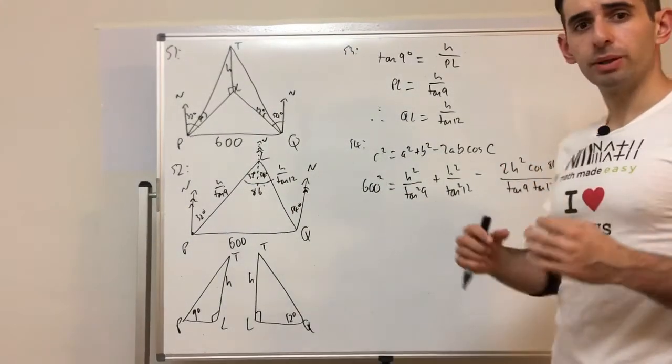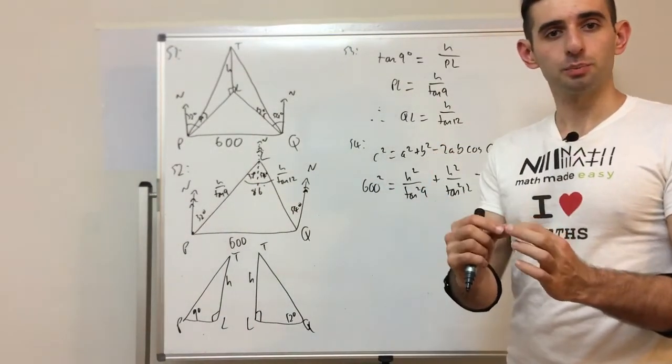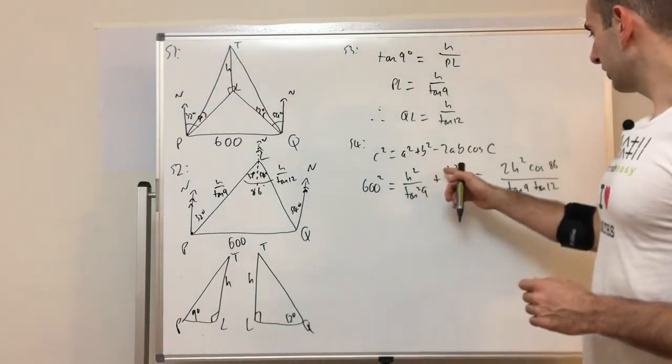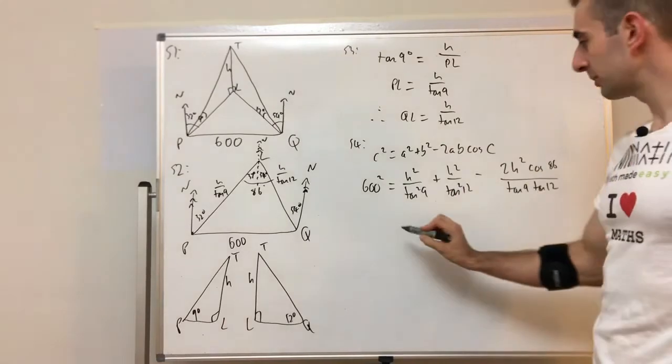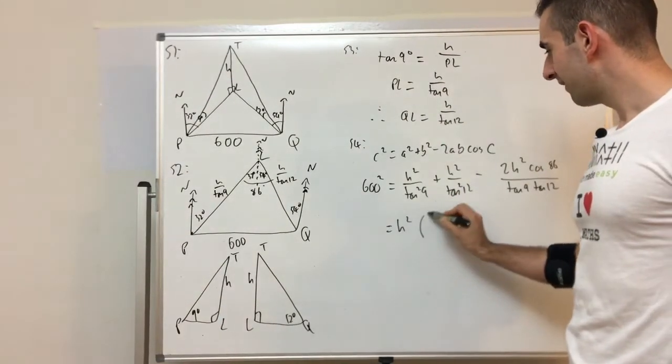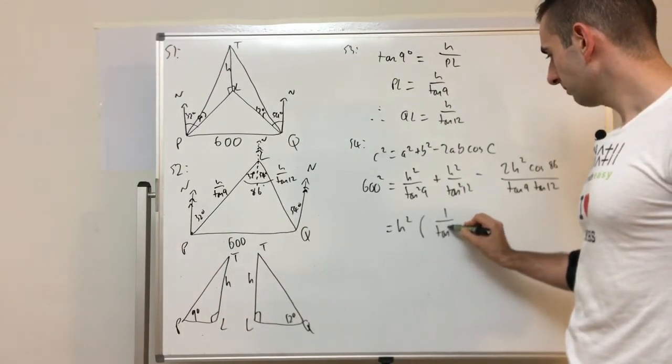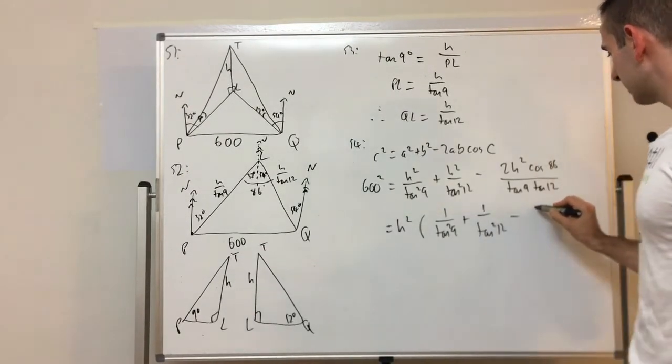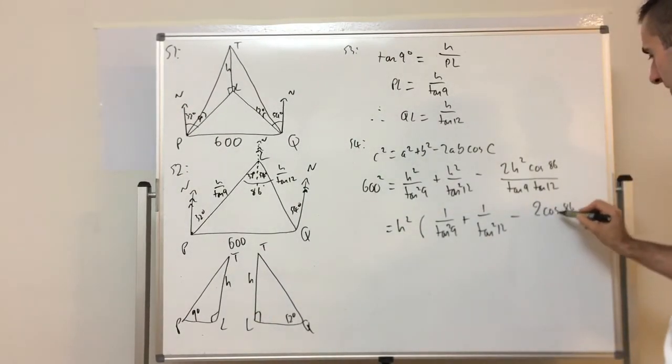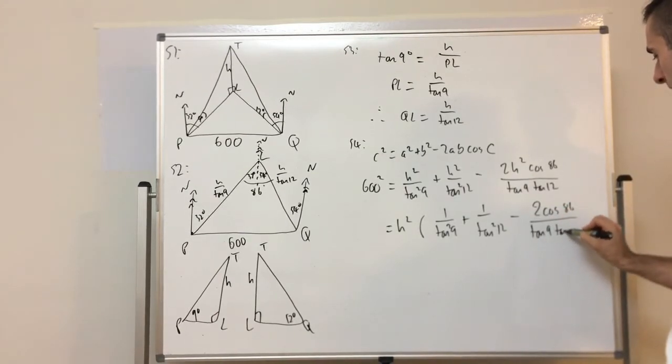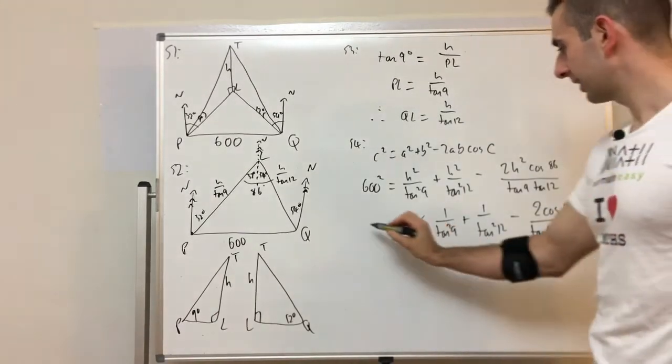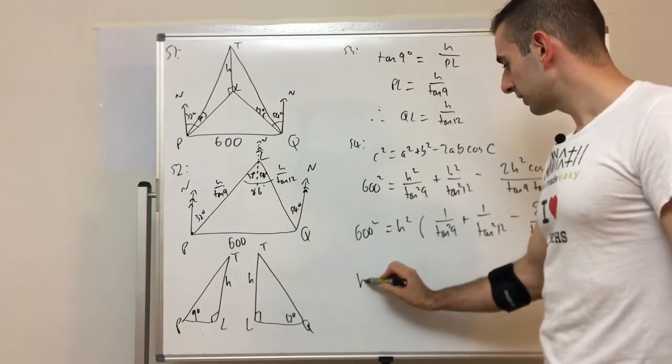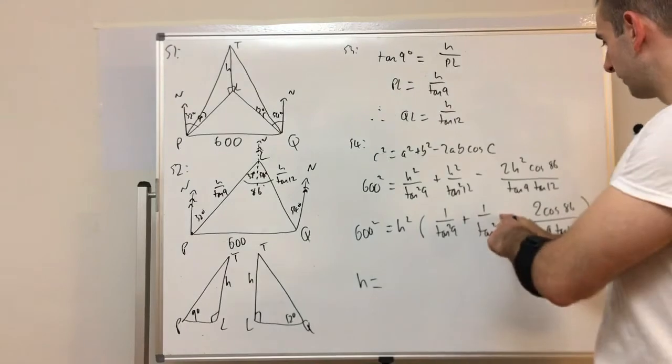So then if we plug it in with C being the side opposite the angle, you get 600² = H²/tan²9 + H²/tan²12 - 2H² cos 86 over tan 9 tan 12, just by timesing these sides together with cos 86. And now this is an equation where we need to solve for H. And the question says H is approximately 79 metres.